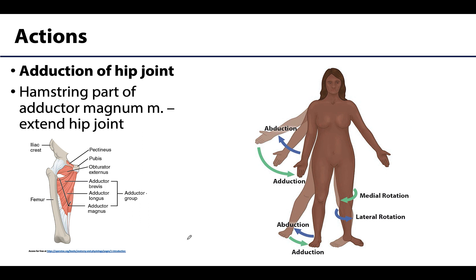Lastly, we can't forget actions - this is a pretty easy one. The medial compartment of the thigh will primarily adduct the hip joint. Adduction is key here, which is pulling the thigh medially towards or even past the median plane - moving it in that direction.